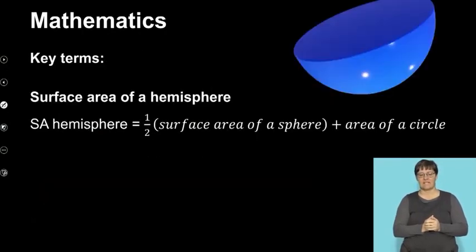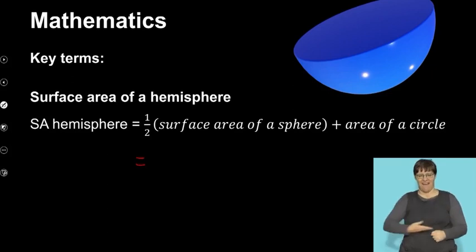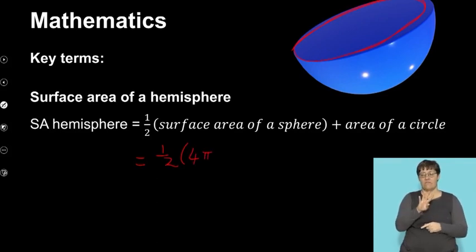We are now going to define the surface area of a hemisphere. A hemisphere is half of a sphere. But if I'm thinking about the surface area of it, it's going to be half the surface area of a sphere because I can see it's half of a sphere. But I also have to account for the fact that I'm adding the area of one circle as well.